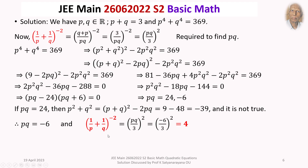Going back to our expression, (1/P + 1/Q)^(−2) equals (PQ/3)². With PQ equal to minus 6, this becomes (−6/3)² equals (−2)² equals 4. So the answer to this question is 4.